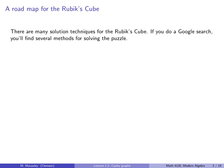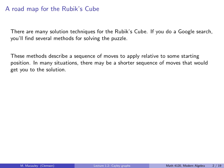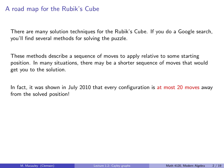Okay, so let's talk about how to solve Rubik's Cube and how to create a roadmap for it. Now there are many solution techniques for solving the Rubik's Cube. If you do a Google search, you'll find several methods for solving the puzzle. Now these methods describe a sequence of moves to apply relative to some starting position. So in many situations, actually in most situations, there are shorter sequences of moves that will get you to the solution. Now in fact, it was shown in July 2010, this is about one month after I met Erno Rubik in Budapest, that every configuration is at most 20 moves away from the solved position.